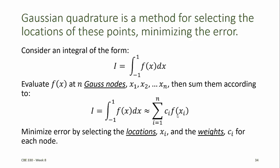Gaussian quadrature minimizes the error by selecting the locations xi and the weights ci for each node.